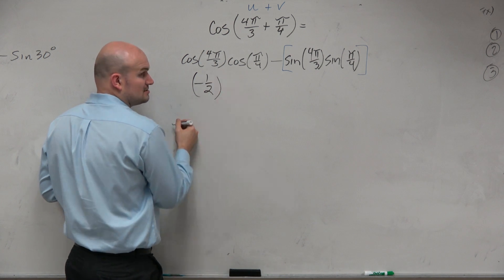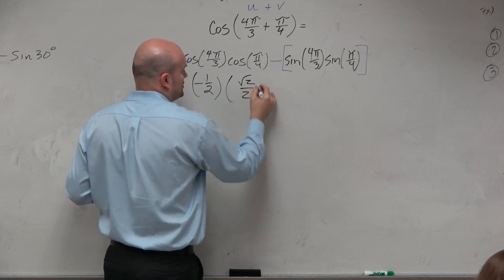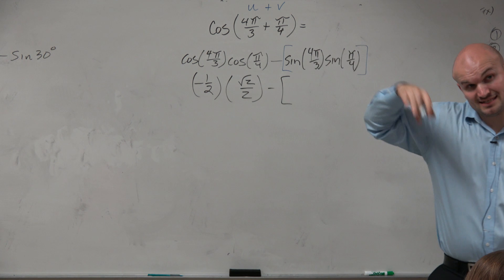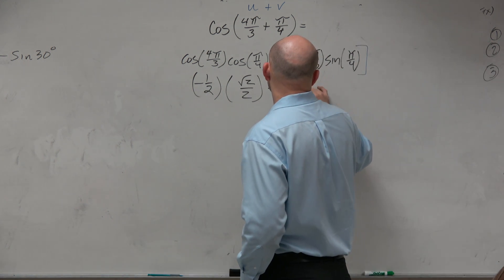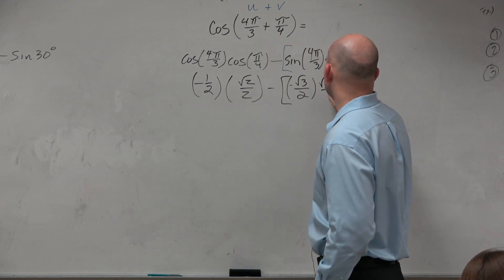Cosine of π/4 is √2/2, minus sine of 4π/3. Again, that's in the third quadrant. That means sine is negative, so that's going to be negative √3/2. And then sine of π/4 is going to be √2/2.